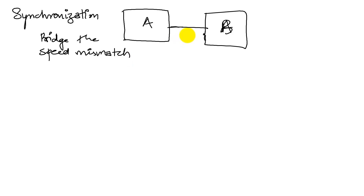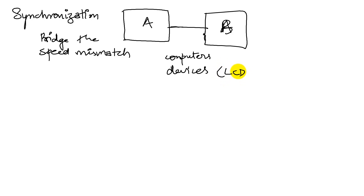Let's take a few scenarios. When I talk about A and B, these devices could be computers — for example, a LaunchPad, a microcomputer or a microcontroller — and it could be devices like an LCD device that we might be working with, or any other external device that's connected. Or we can even think of this with an analogy where we consider A and B to be people. So what happens if A talks a lot faster than B listens?